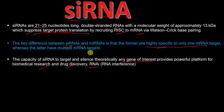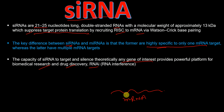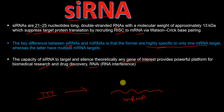So how do we design the siRNA to target a particular messenger RNA? Let's say that this is our target mRNA. If we want to silence this particular target mRNA, then we will design siRNA in a way that the siRNA sequence is complementary to our target mRNA.